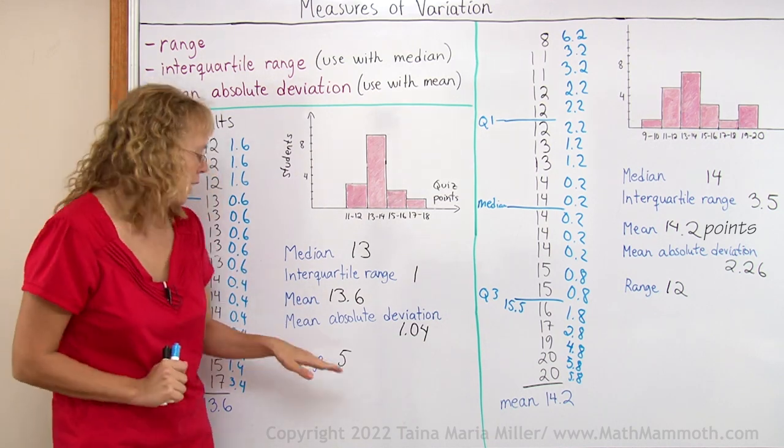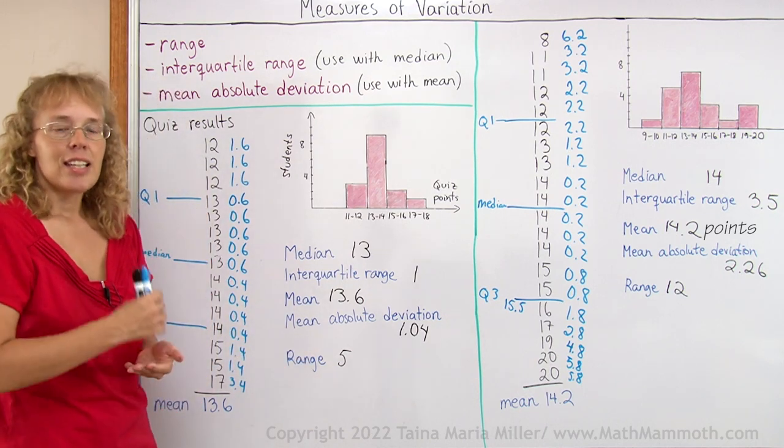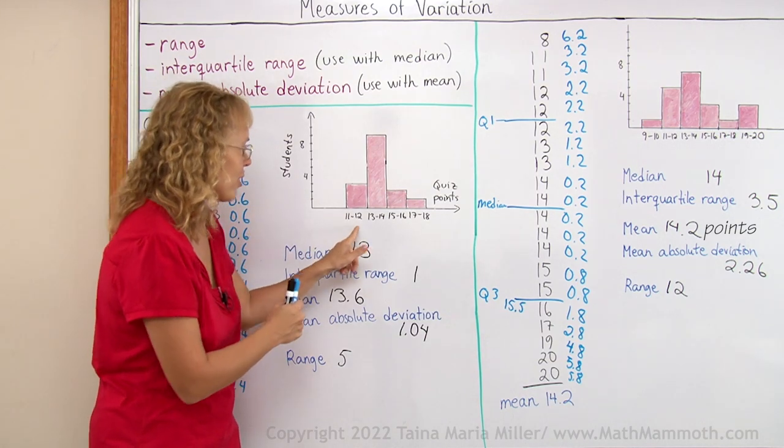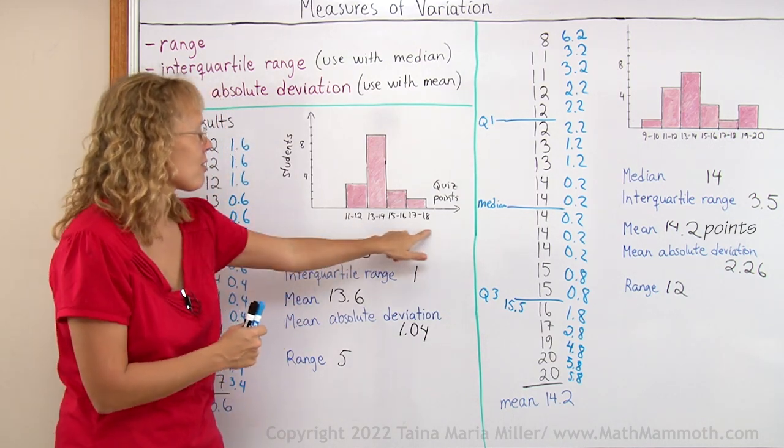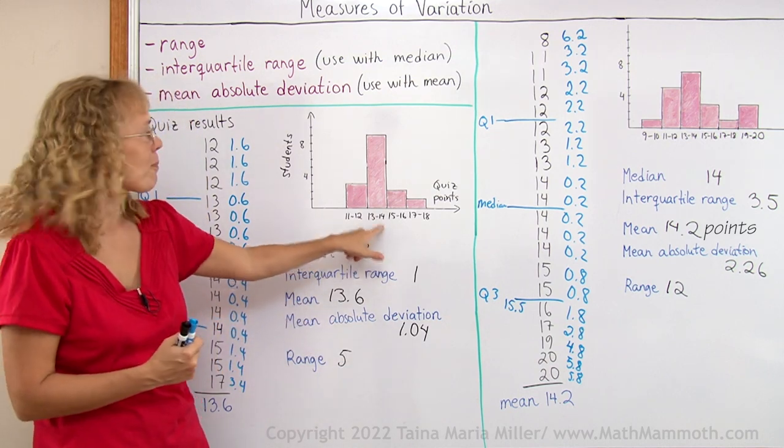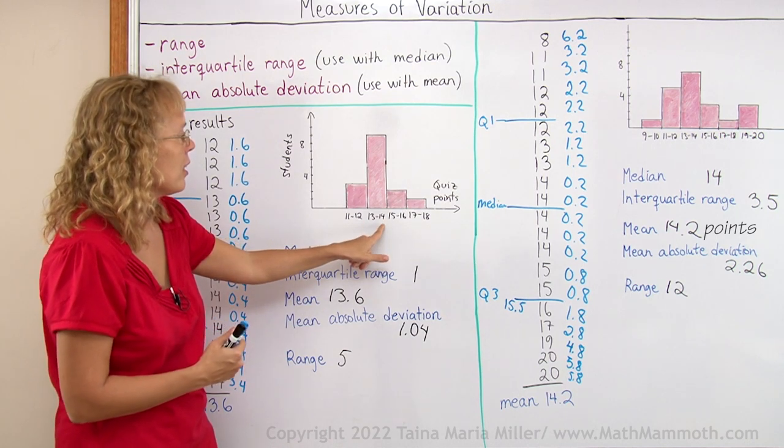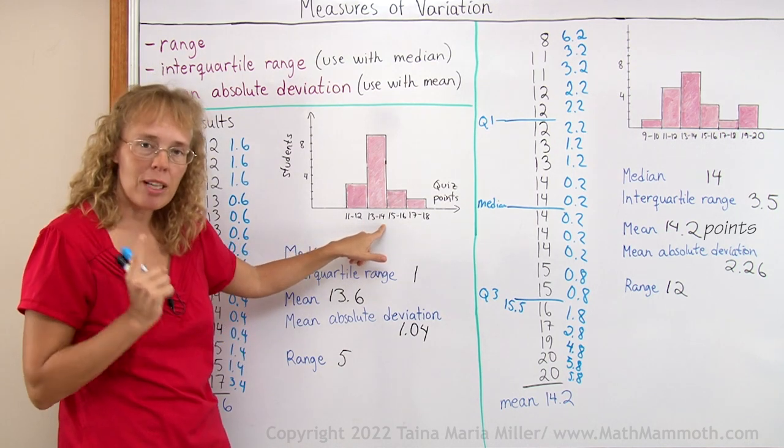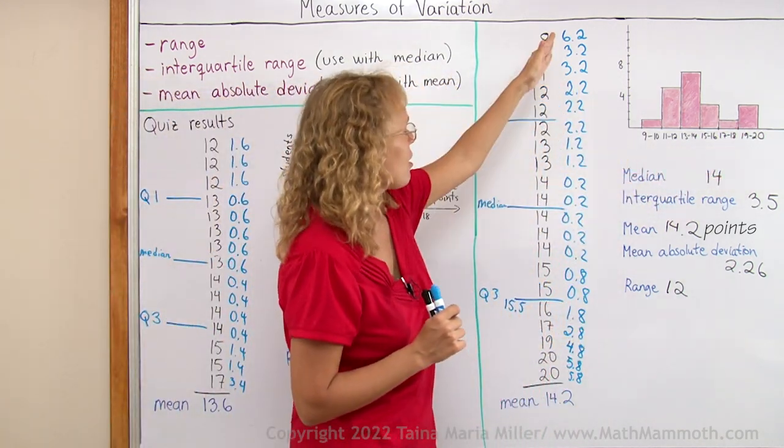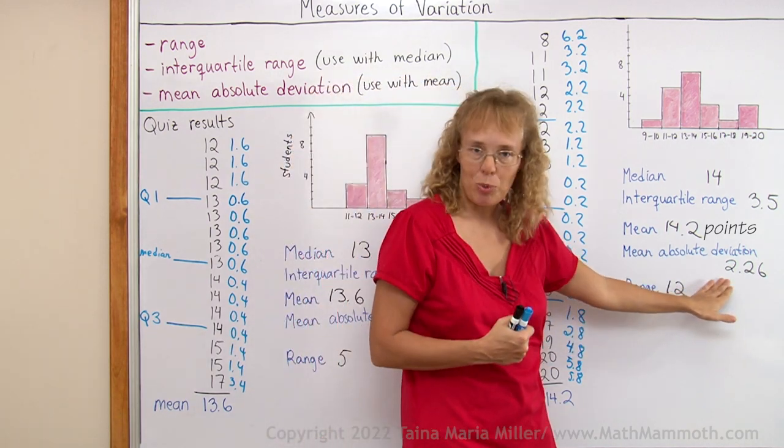And one more word about the mean absolute deviation. Like I said, it tells us the average distance of data values to the mean. So on average these test results just differ by about one point from the mean, which was 13.6 somewhere here. So on average they differ by one point from the mean, whereas over here on average the test results differ from the mean by over two points.